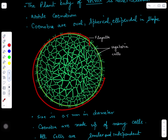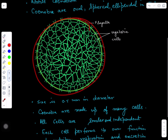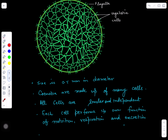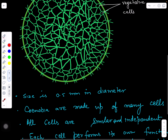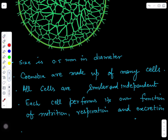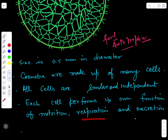The shape here is spherical with a size of 0.5 mm in diameter. All cells are similar and independent because each cell can perform its own nutrition — due to its green color it can form food, so it is autotrophic. Each cell can do photosynthesis on its own, it can respire on its own, and it can excrete waste products. Each cell is independent in nutrition, respiration, and excretion.